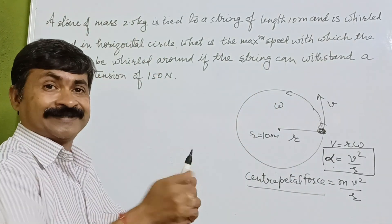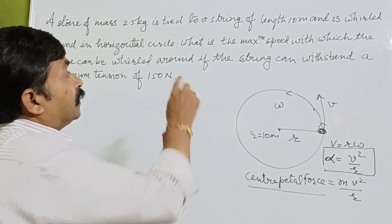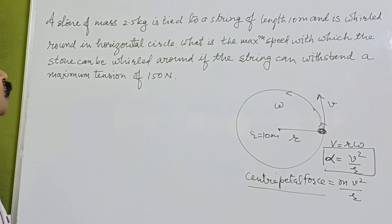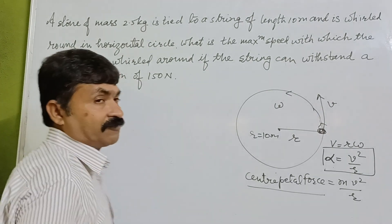We take a stone and tied it with a string, and if you are rolling it. So what is the maximum speed with which the stone can be walled around, if the string can resist the maximum tension of 150 N.